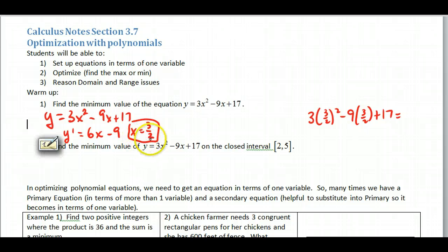We want to find what the actual minimum value is, so we have to take that x value and plug it into our original function to figure out what our minimum value is. So if I plug that all in, I get 10.25, and so this would be the minimum value that I'm looking for on this interval.